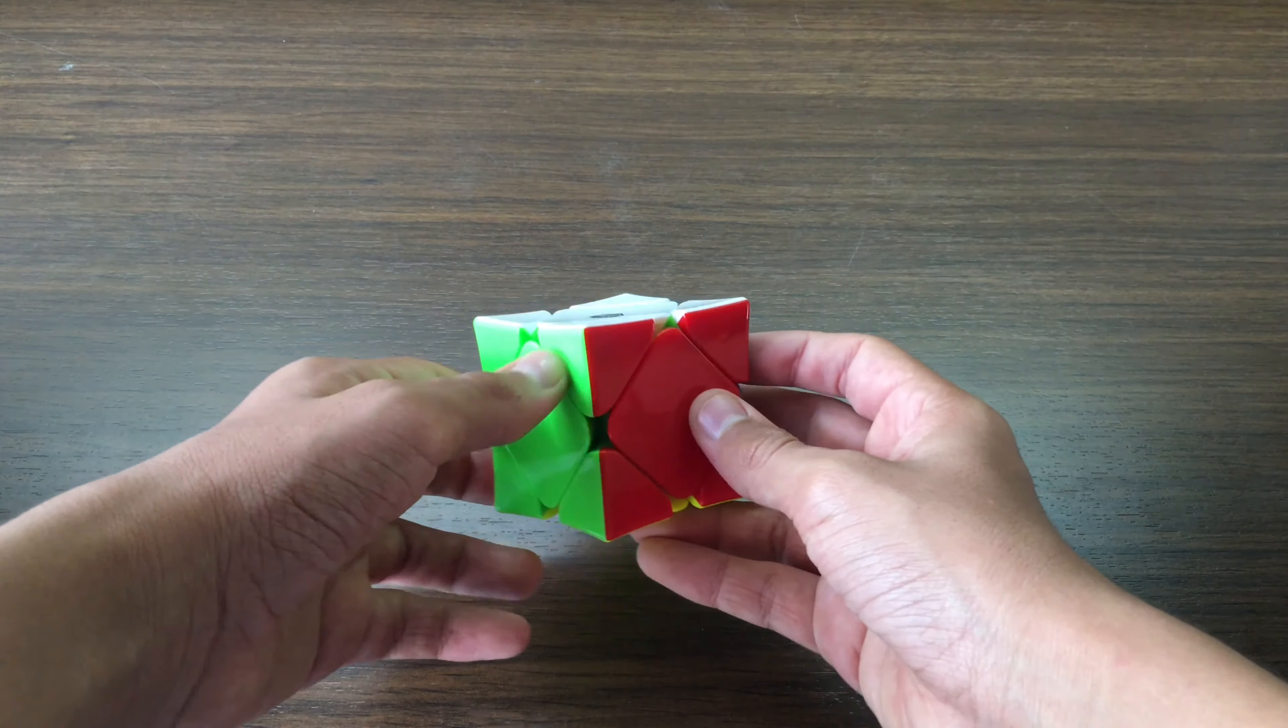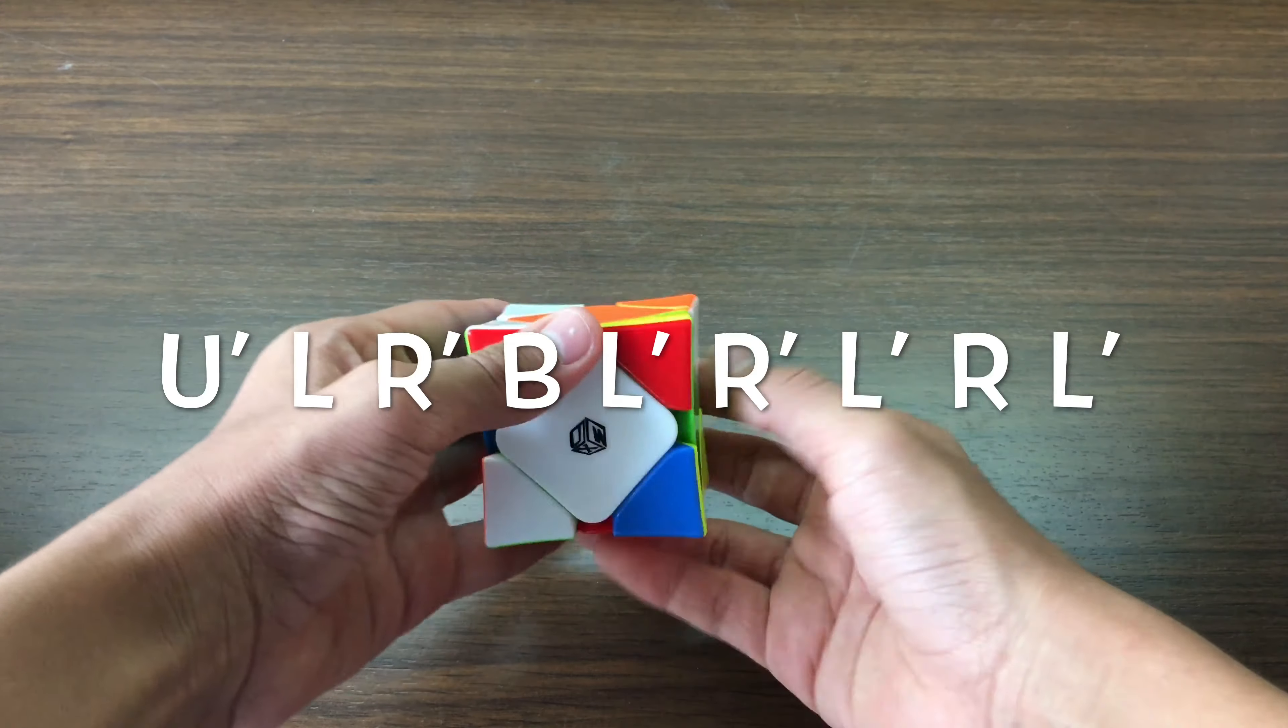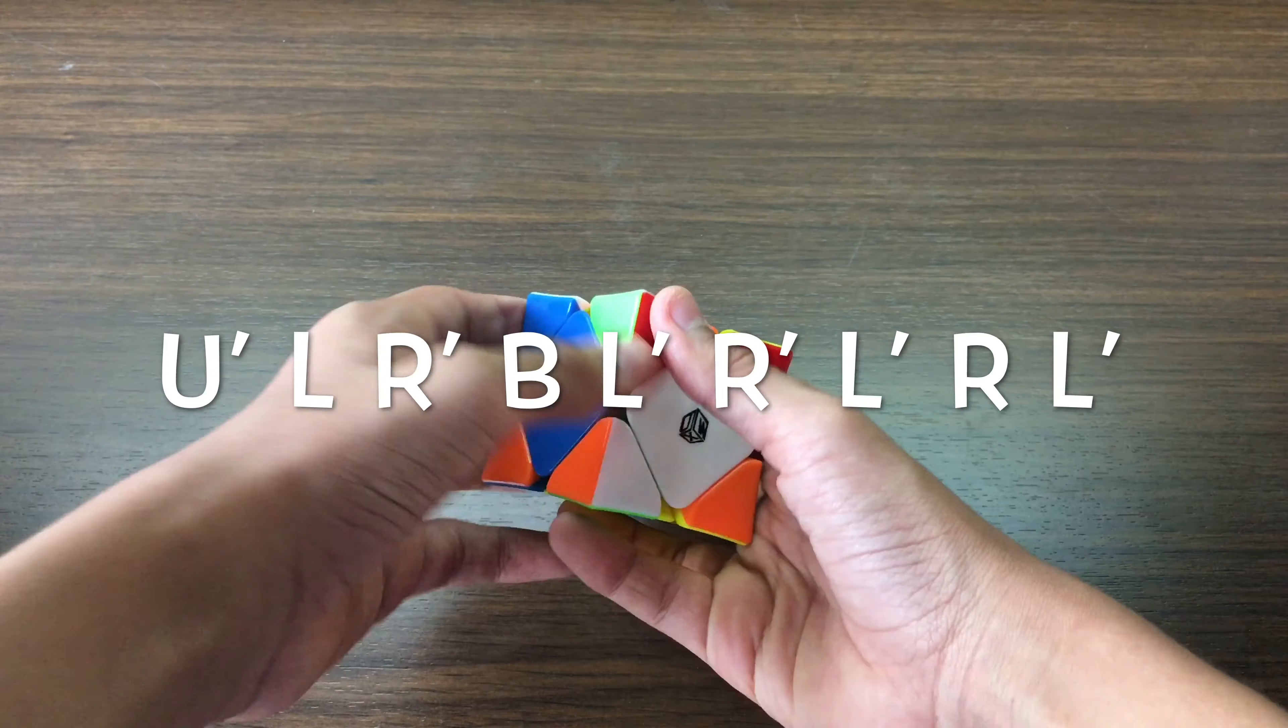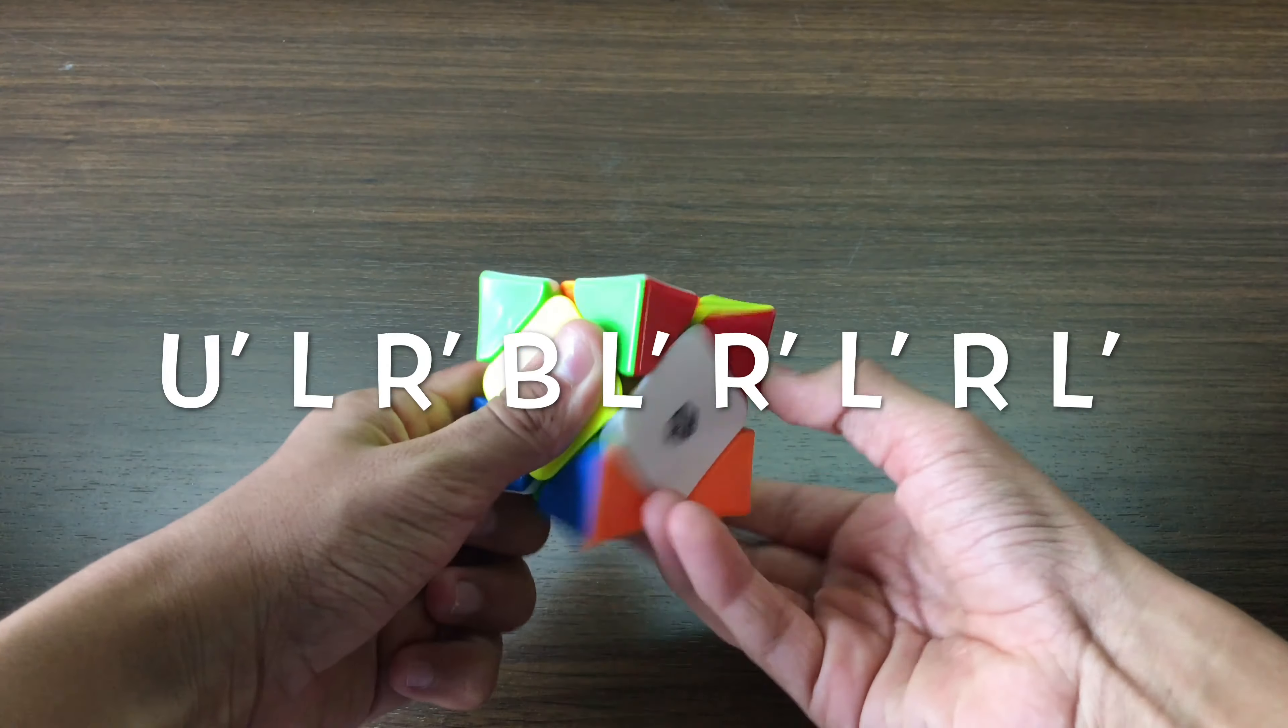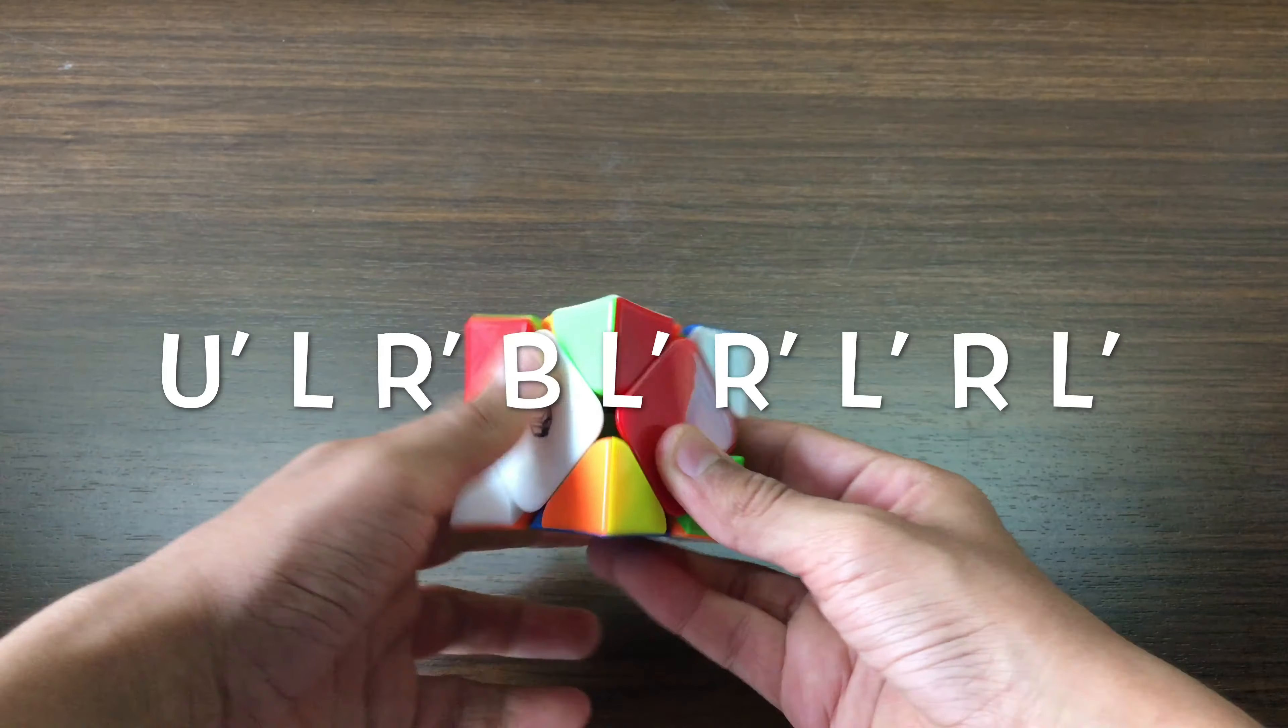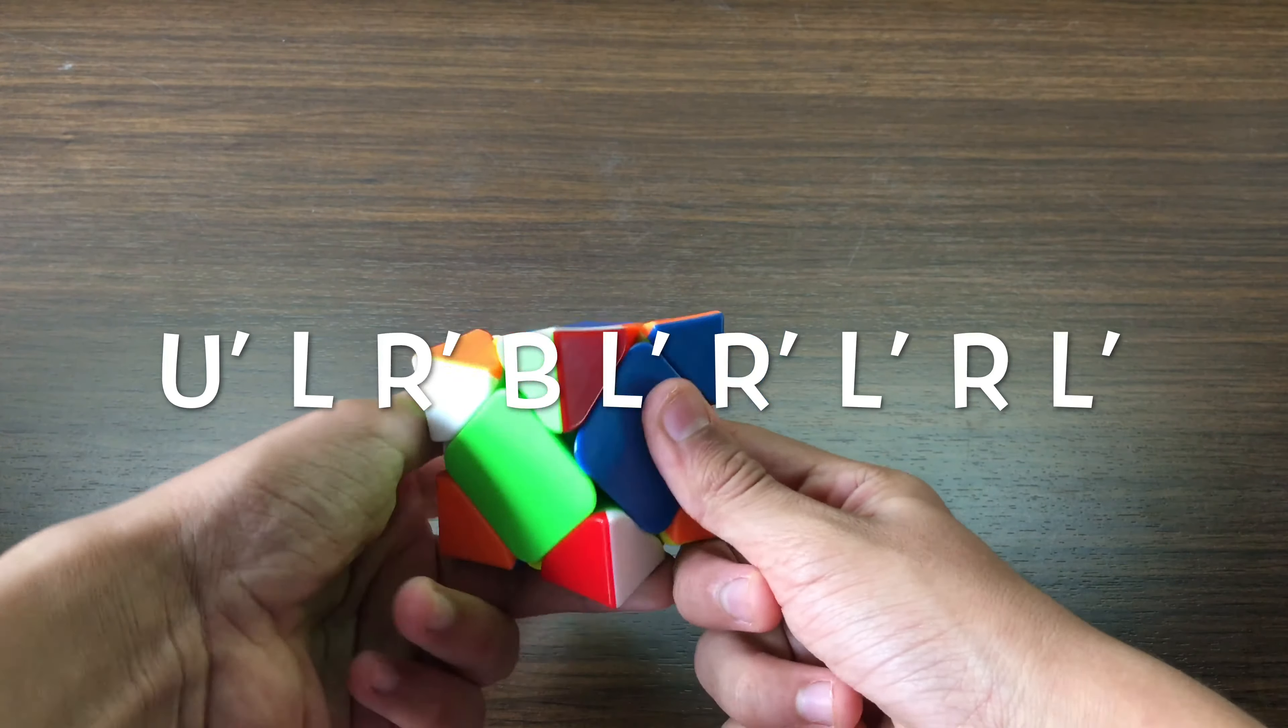the left, here's the scramble: U prime, L, R prime, B, L prime, R prime, L prime, R, L prime.